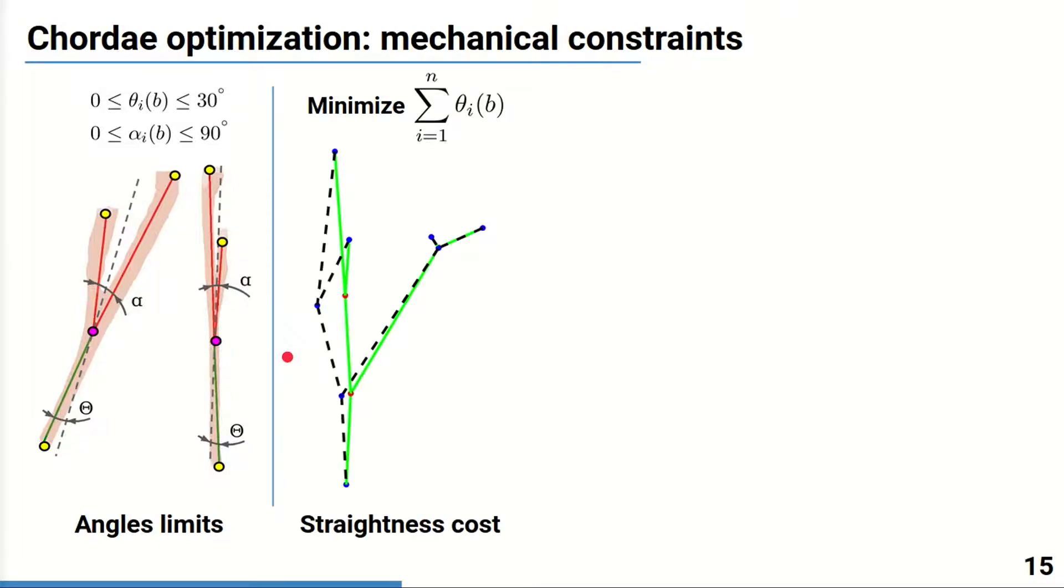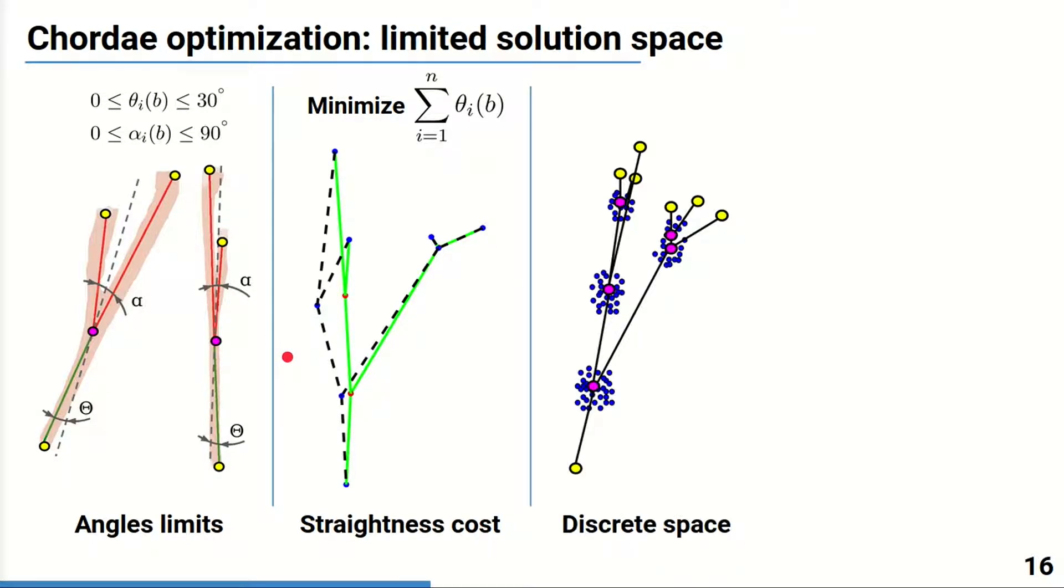To quantify the slack of a chord, we propose to estimate a straightness cost as the sum of the angle theta and minimize it to find a branching node configuration in tension, as shown here in green. To avoid putting all the branching nodes in one point, we define a discrete space of solutions for the branching nodes. The points that are in the vicinity of the initial branching nodes positions, as shown here in blue.